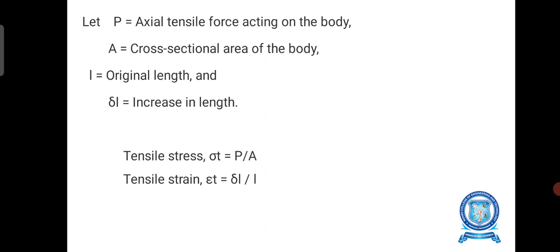Let P equal axial tensile force acting on the body, A equal cross-sectional area of the body, l equal original length, and delta l equal increase in length. Tensile stress, sigma t equals P by A. Tensile strain, epsilon t equals delta l divided by l.